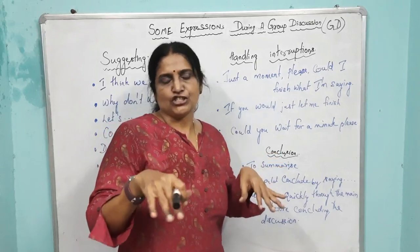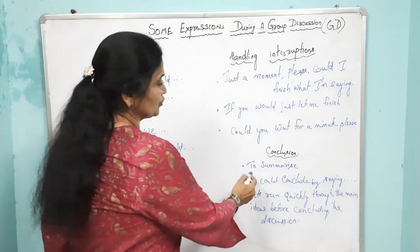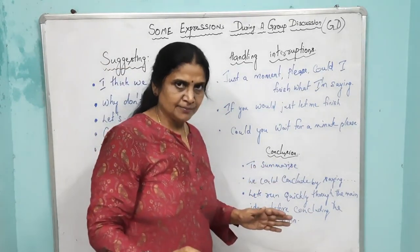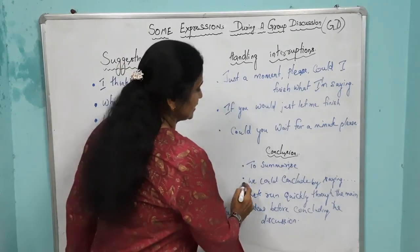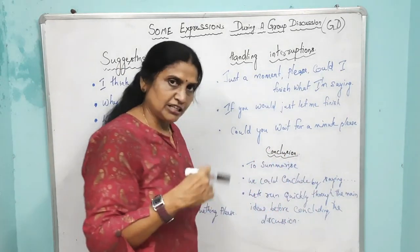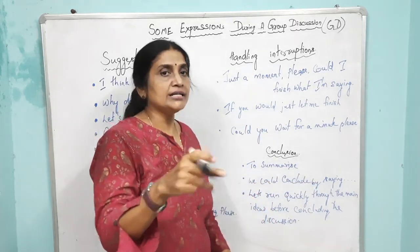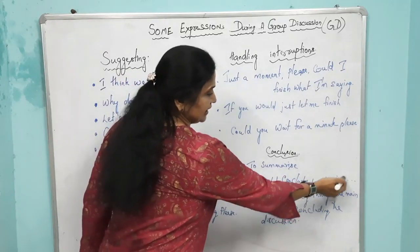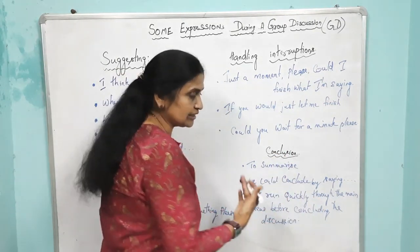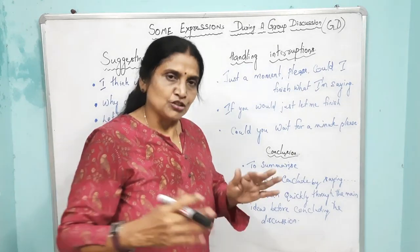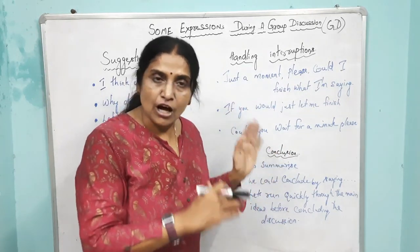Suppose all of them finish talking and your role is to conclude the discussion. How to conclude? You say: 'To summarize, these are the points we discussed and we have come to the conclusion...' or 'We could conclude by saying...' or 'Let us quickly run through the main ideas before concluding the discussion.' This is how you wrap up a group discussion.